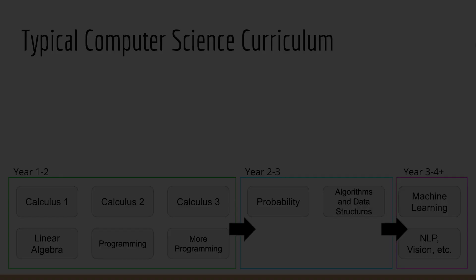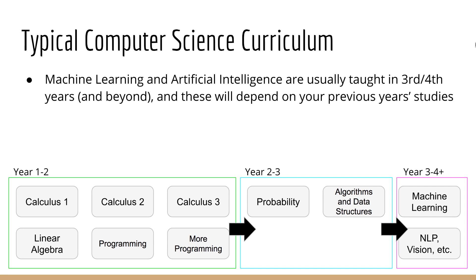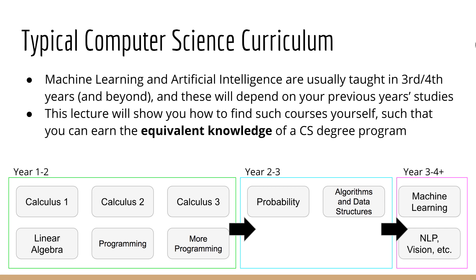If you take courses in machine learning and artificial intelligence, usually these will be during the final years of your degree. It's because these courses depend on all the things you learned in the first two years. Some examples of courses you might take in the first two years are calculus, linear algebra, probability, programming, data structures, and so on. This lecture is all about how to find such courses yourself at the college level, such that you can learn the equivalent of a computer science degree program. For all the people who ask me how to prepare for machine learning, this is the answer.